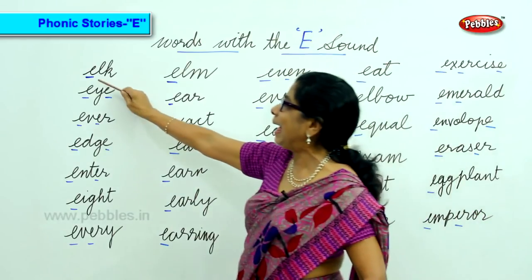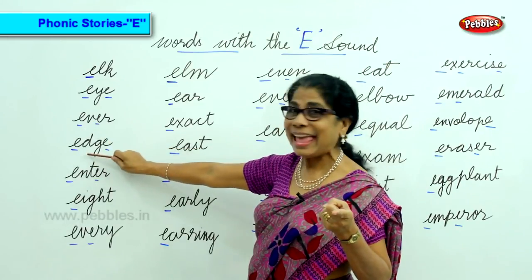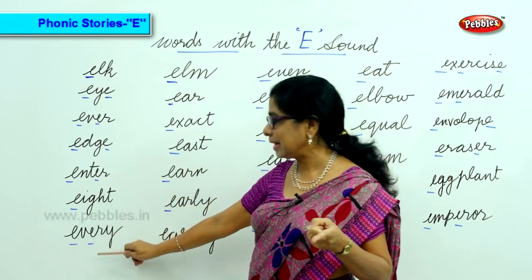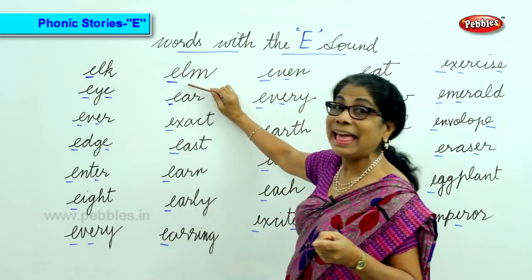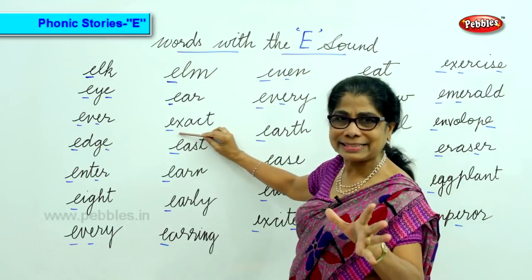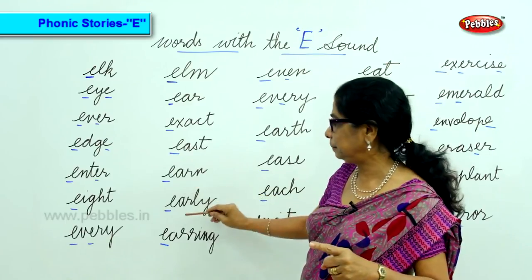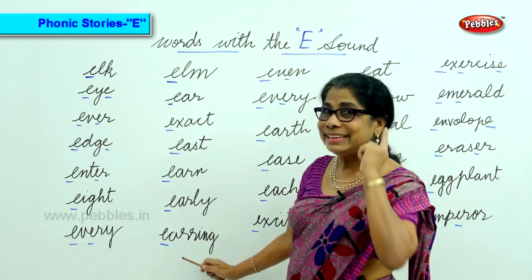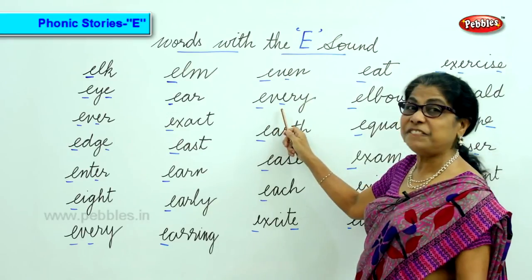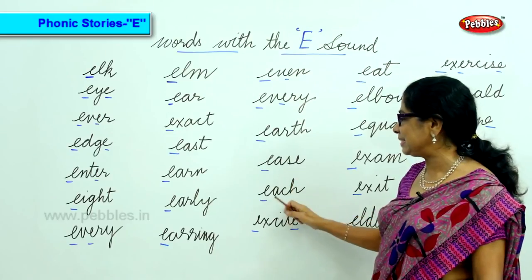Words with the E sound: elk, ever, edge, enter, every, elm, ear, exact, east, earn, early, hearing, even, every, earth, ease, eat.